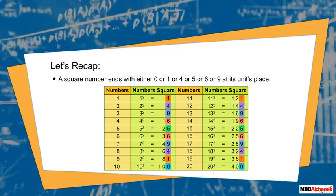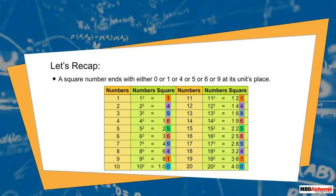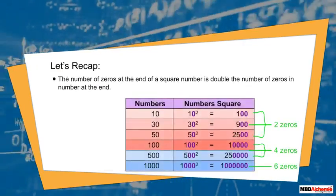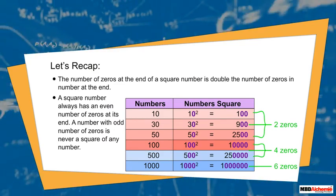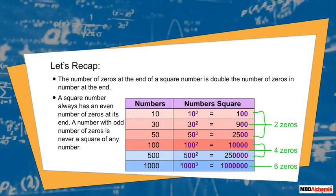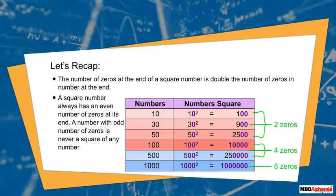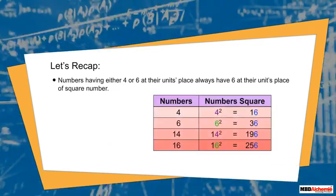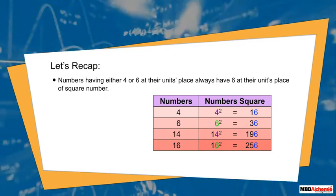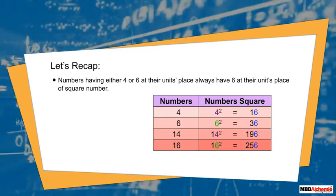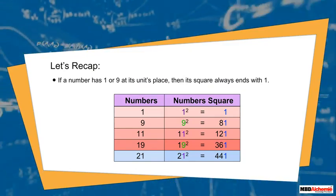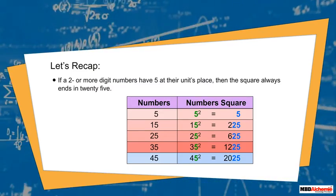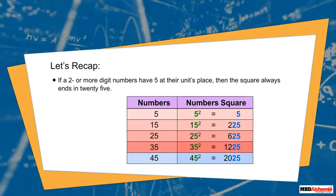Let us recap. A square number ends with either 0, 1, 4, 5, 6, or 9 at its unit's place. The number of zeros at the end of a square number is double the number of zeros in the number at the end. A square number always has an even number of zeros at its end. A number with an odd number of zeros is never a square of any number. Numbers having either 4 or 6 at their unit's place always have 6 at their unit's place of the square number. If a number has 1 or 9 at its unit's place, then its square always ends with 1. If a 2 or more digit number has 5 at its unit's place, then the square always ends in 25.